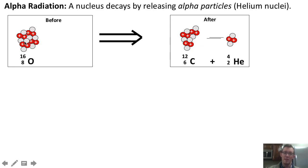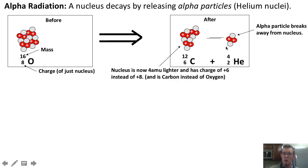You've got a diagram of that here. We've got an oxygen nucleus, and because the nucleus lost this alpha particle, it is now four atomic mass units lighter. The helium nucleus weighed four atomic mass units, so what's left over is no longer 16 atomic mass units — it now only weighs 12 atomic mass units.